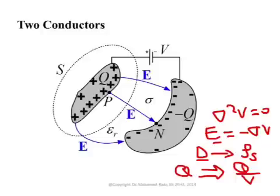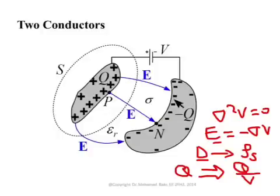From Q we can get the ratio Q over V — the voltage difference between the two electrodes — and this gives the capacitance. This is the V method. It is the more general approach: start with Laplace's equation, get the electric field, get the vector D, apply boundary conditions to get surface charge density, integrate to get total charge, then divide by the voltage difference to obtain the capacitance C.